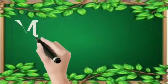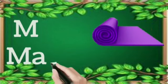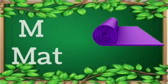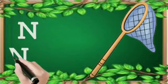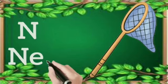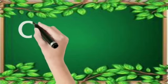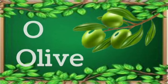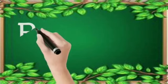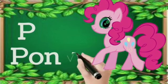M for Mat, N for Net, O for Olives, P for Pony.